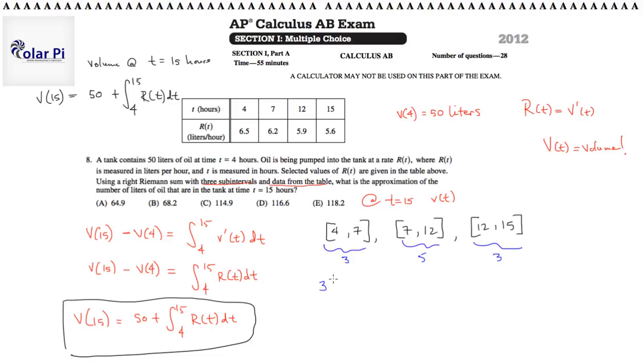So, that's going to say 3 times R of 7 plus 5 times R of 12. That was kind of too many parentheses, but whatever. You get it. Plus 3 times R of 15.